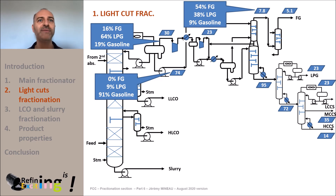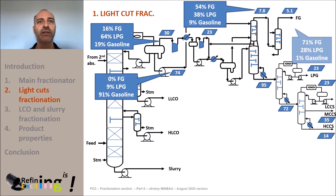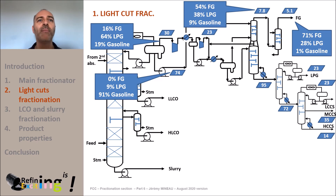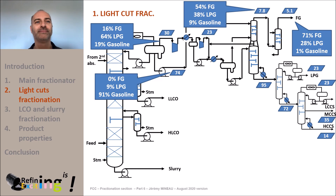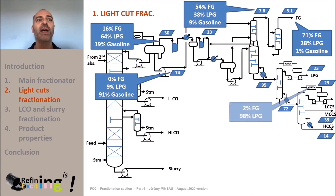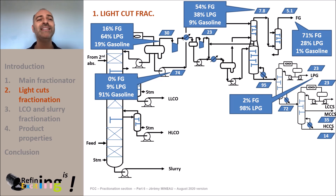This also led to reducing the gas flow down to 8 tons per hour. Finally, the secondary absorber allowed to increase the fuel gas concentration in C1 plus C2 by 15 points to 78%. It also reduced the amount of LPG by 10 points down to 28%, and reduced the amount of gasoline down to 1 weight percent, leading to a fuel gas rate decrease down to 5 tons per hour. This is how we succeed in concentrating the fuel gas stream into light molecules and concentrating the LPG cut in C3 and C4, using a series of liquid-gas absorptions and several distillation steps.